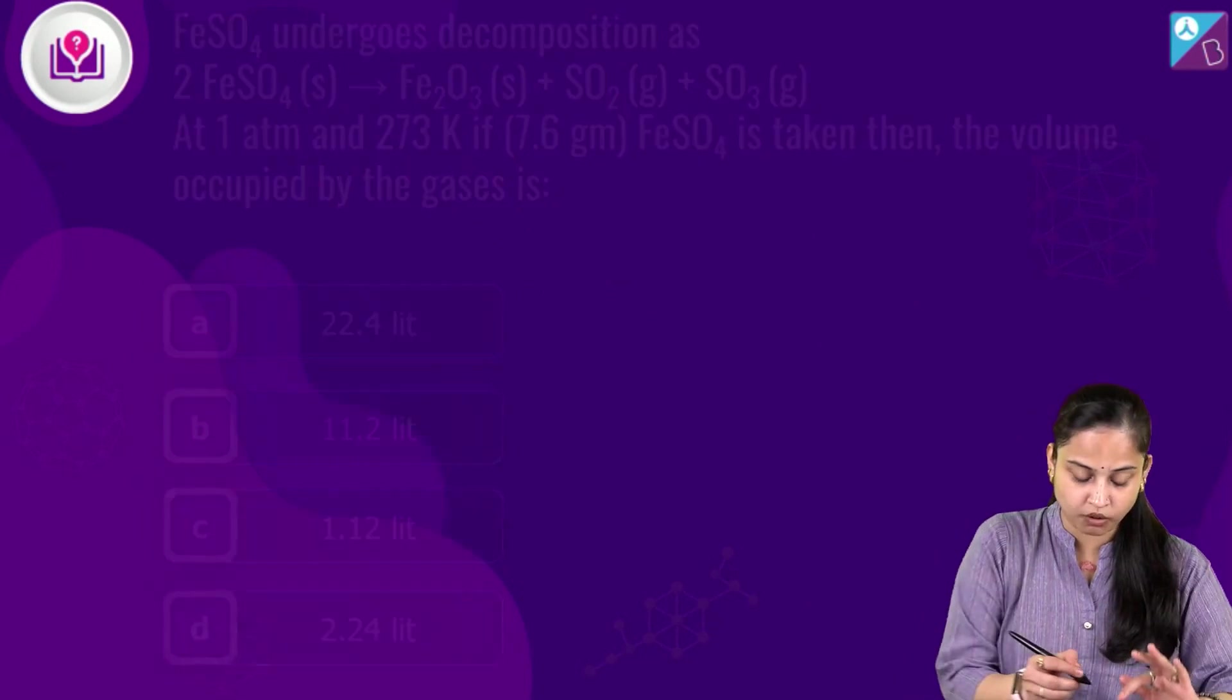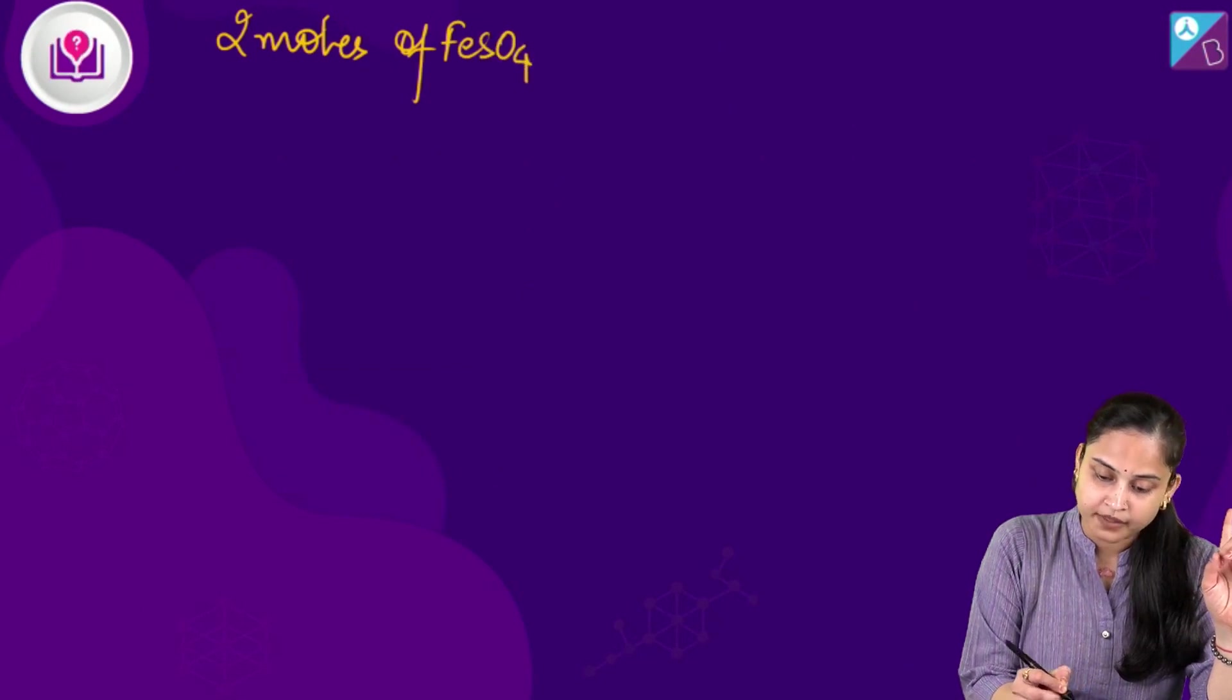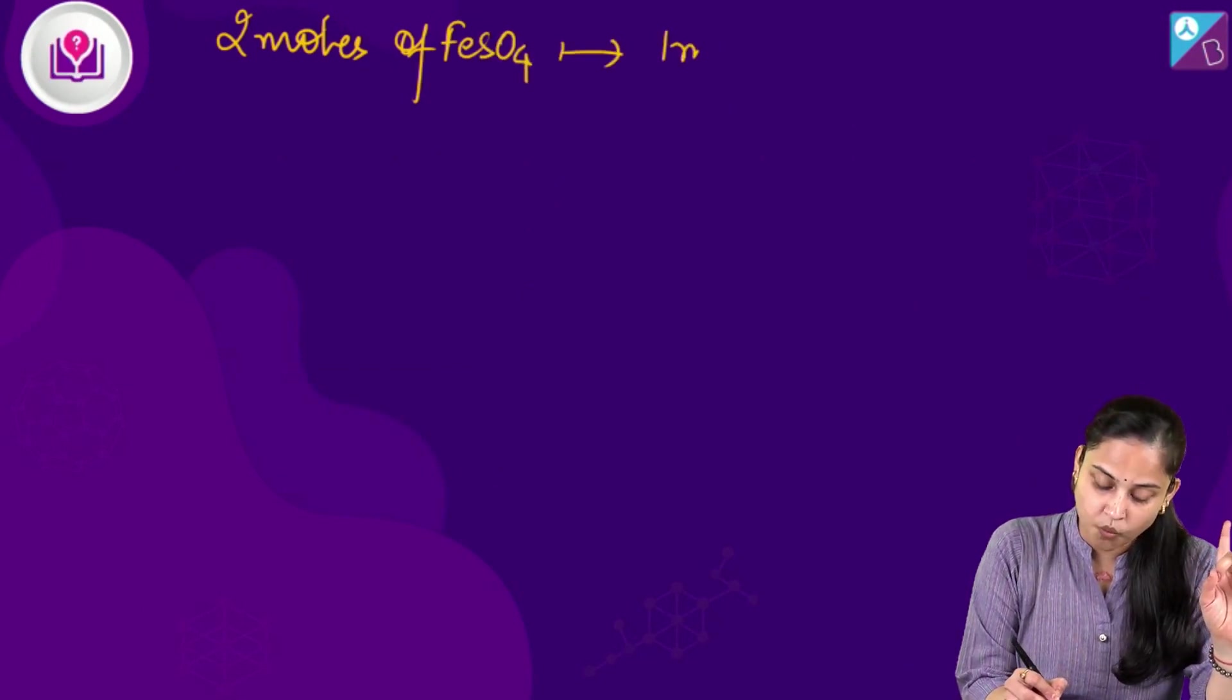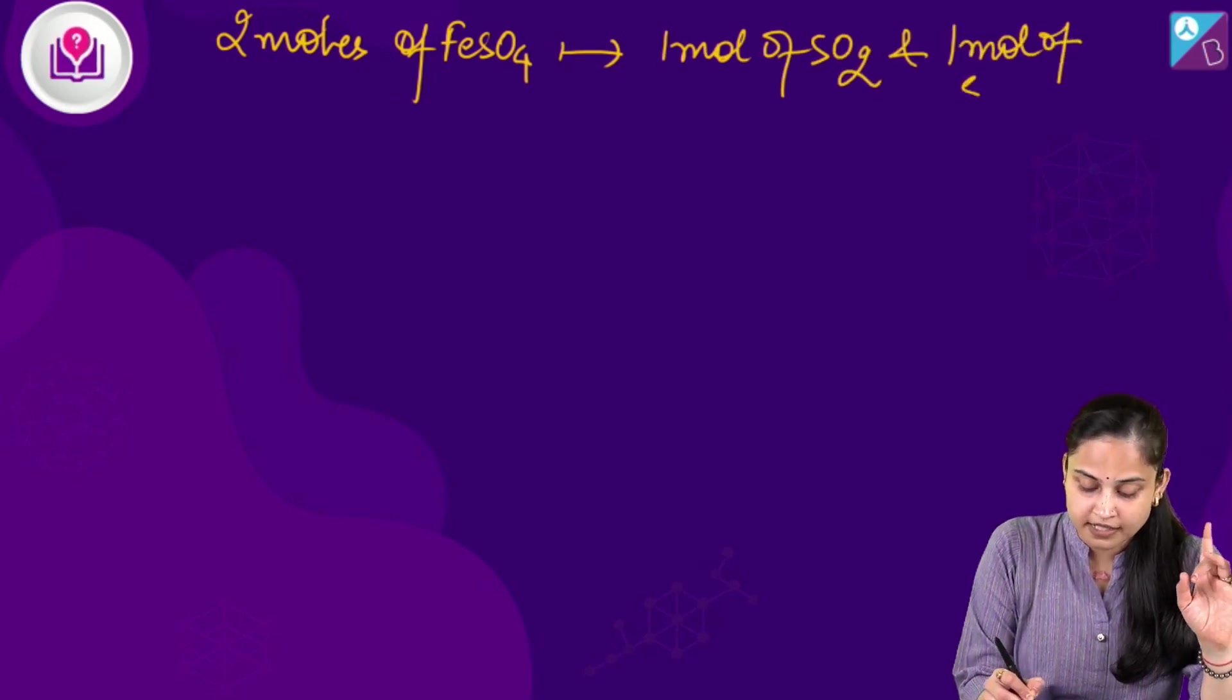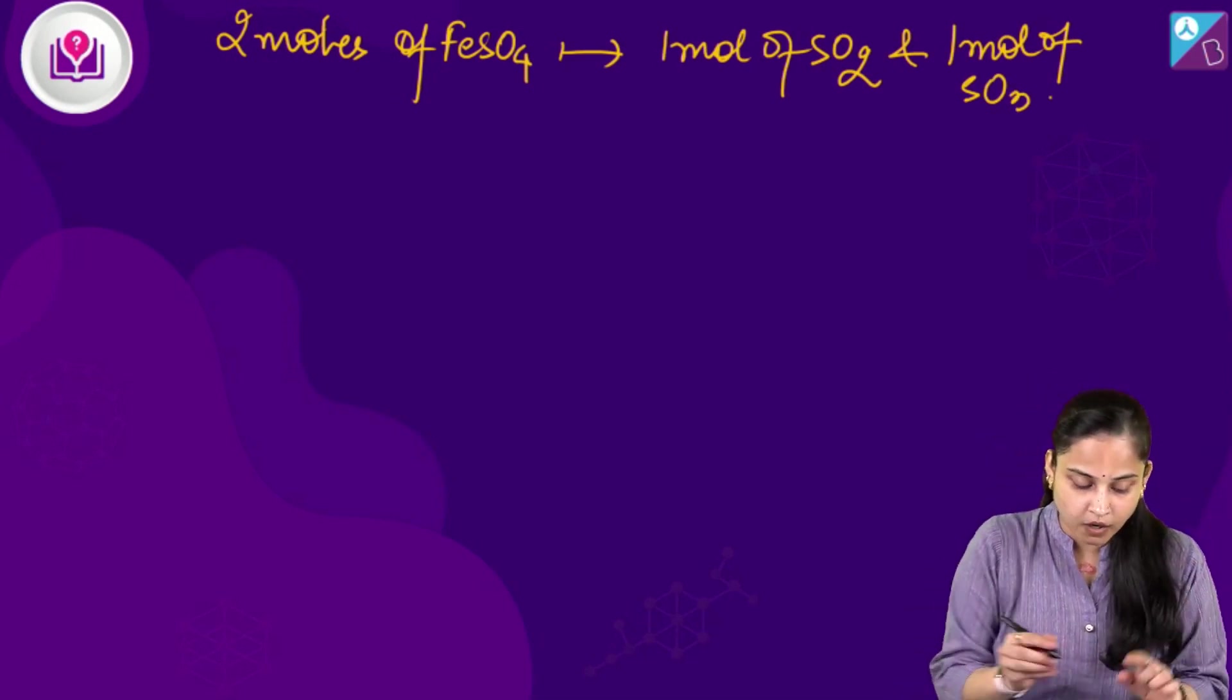So, I can also write that two moles of FeSO₄ is actually giving us one mole of sulphur dioxide and one mole of sulphur trioxide.